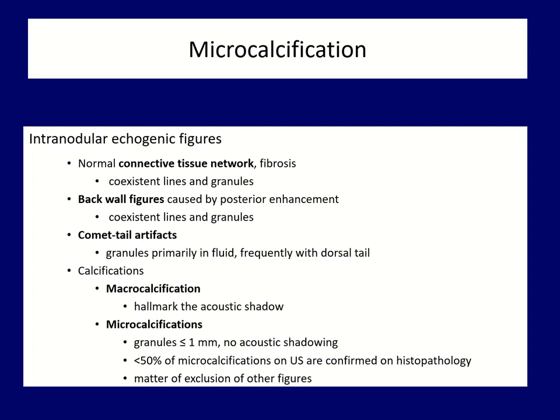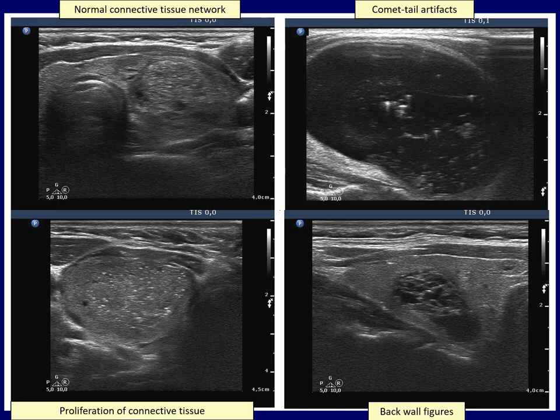There are two forms of calcification. The hallmark of a macro or coarse calcification is the acoustic shadow dorsal to the primary focus, though the latter is not always visible. Microcalcifications are echogenic spots not larger than one millimeter in diameter and lack acoustic shadowing. Two important considerations: first, true microcalcification represents psammoma bodies of papillary cancer. However, in more than twice as many cases, microcalcifications described on ultrasound are not actually present.